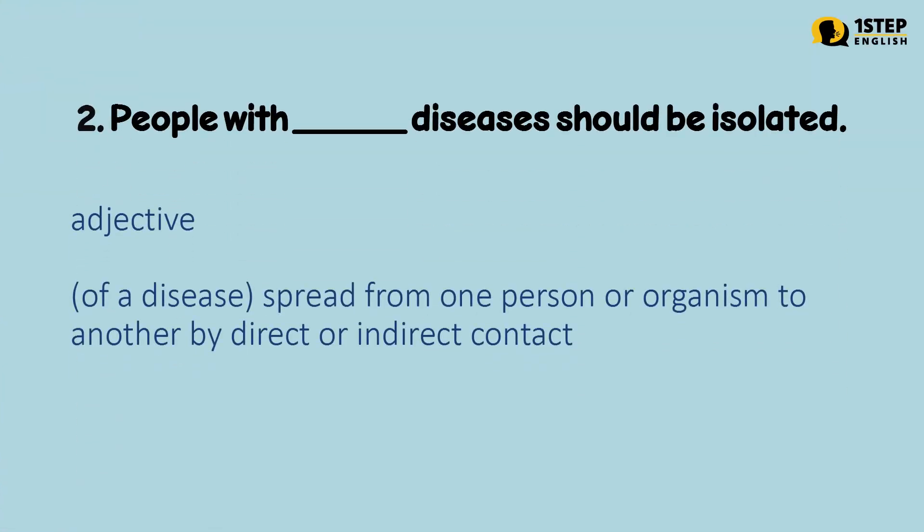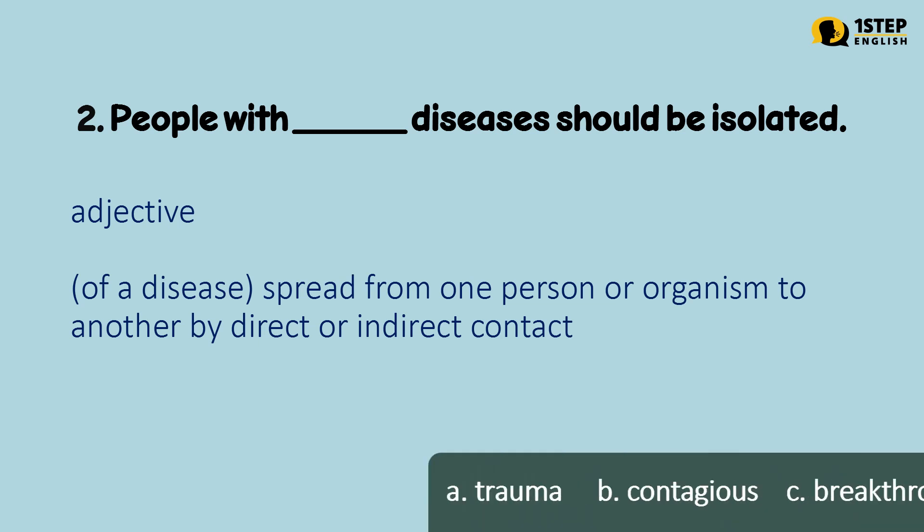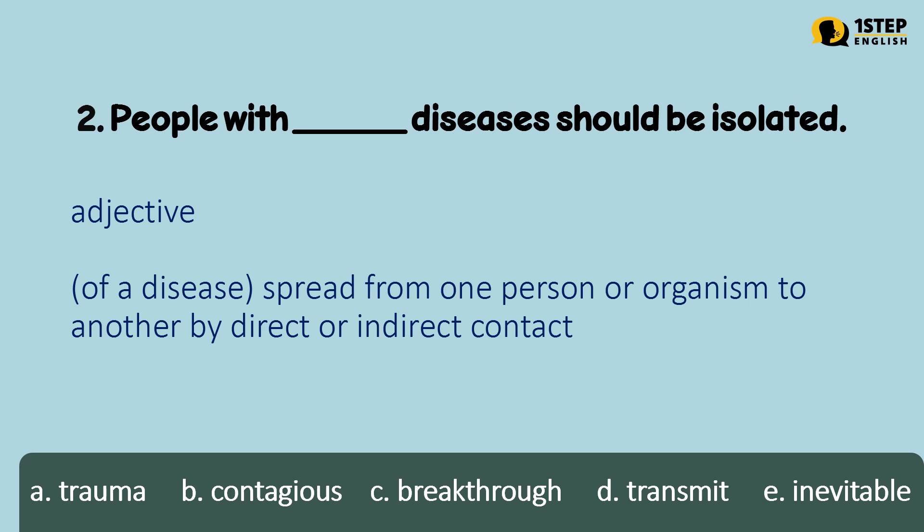Number 2: people with ___ diseases should be isolated. An adjective meaning of a disease spread from one person or organism to another by direct or indirect contact. Letter A: trauma. Letter B: contagious. Letter C: breakthrough. Letter D: transmit. Letter E: inevitable. The correct answer is Letter B — people with contagious diseases should be isolated.